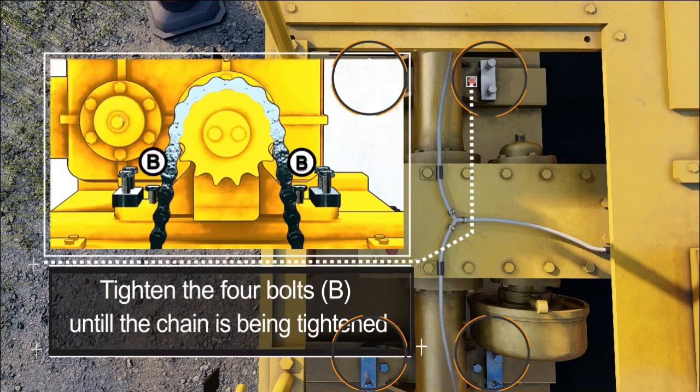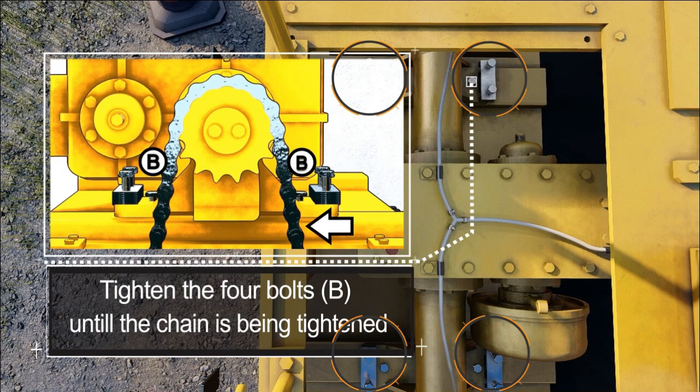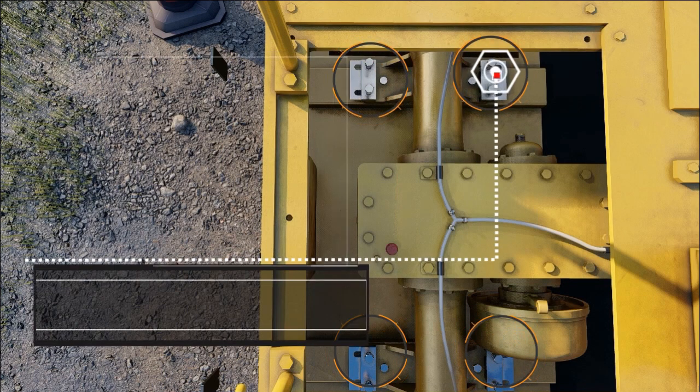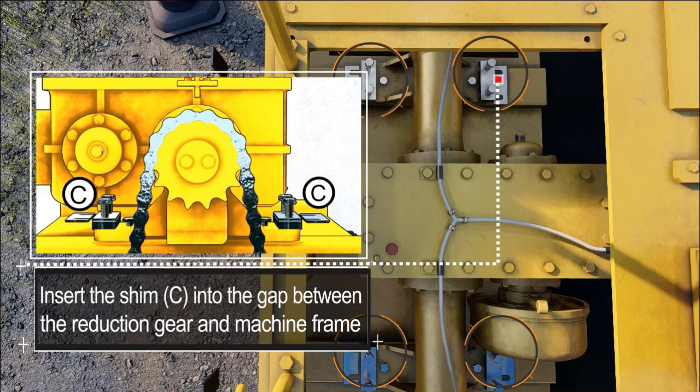Tighten the four bolts D until the chain is being tightened. Insert the shim C into the gap between the reduction gear and machine frame.